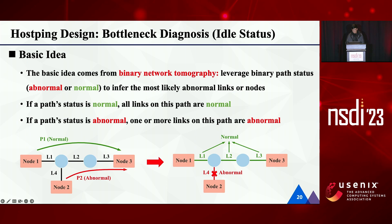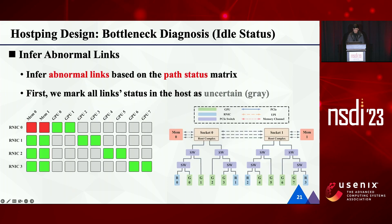Our idea for bottleneck diagnosis comes from binary network tomography. In a given network topology, if a path is normal, we can infer that all links on this path are normal. Otherwise, one or more links on this path may be failed. With enough path status information, we can infer link status. For example, as path 1 is normal, we could infer that links 1 to 3 are all normal. Then, as path 2 is abnormal, we could infer that link 4 is abnormal. According to this basic idea, we could infer intra-host abnormal links based on path status metrics.